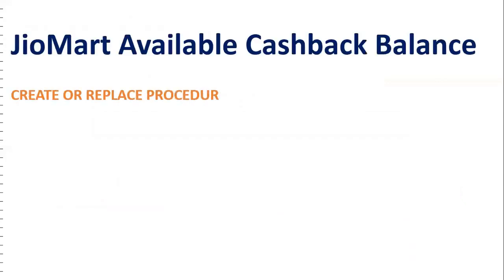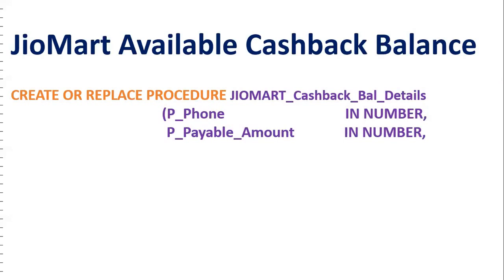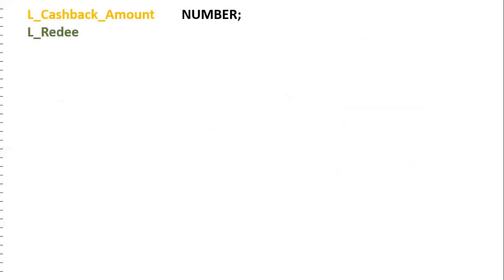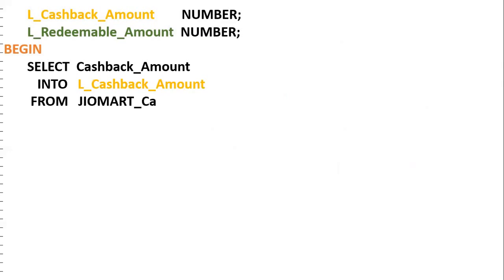Let us write the procedure. Create or replace procedure — procedure name is GeoMart cashback balance details. Input parameters are phone number and how much amount I need to pay: P_phone and P_payable_amount. Output parameters are cashback amount and redeemable amount — two input parameters and two output parameters. I am declaring two local variables: L_cashback_amount and L_redeemable_amount. Into clause to store the variable.